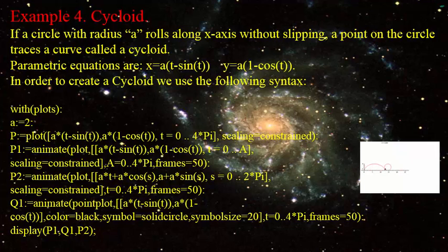Example 4: Cycloid. If a circle with radius R rolls along the x-axis without slipping, a point on the circle traces a curve called a cycloid. The parametric equations are as follows.